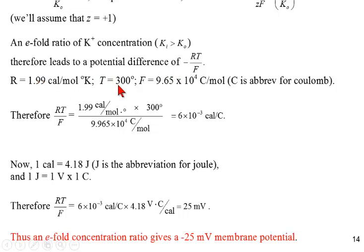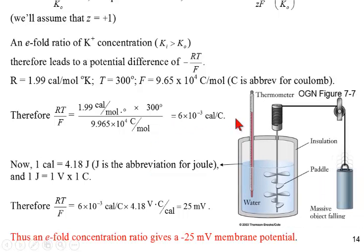For this case, we know that Z is plus one, the charge on the potassium ion. For an e-fold change of potassium concentration, in which the inside is greater than the outside, we get a potential difference of minus RT over F. We have R, and we have T, and we have F. An e-fold difference gives us RT over F. One point that we have to change from chemistry to electrophysiology is the mechanical equivalent of heat, changing from calories to joules, 4.18 joules per calorie. RT over F for an e-fold difference in concentration between the inside and the outside is 25 millivolts.